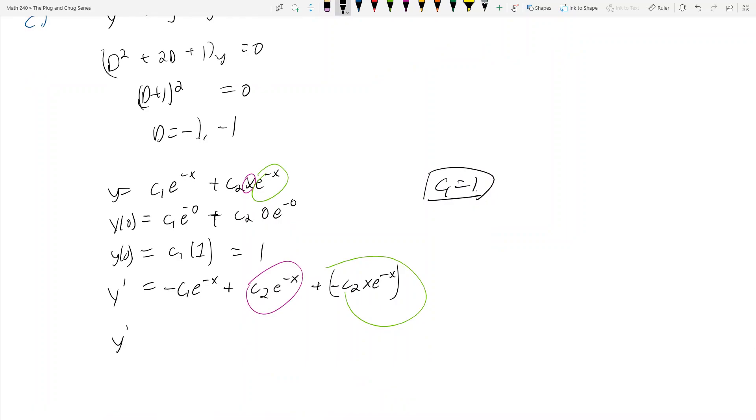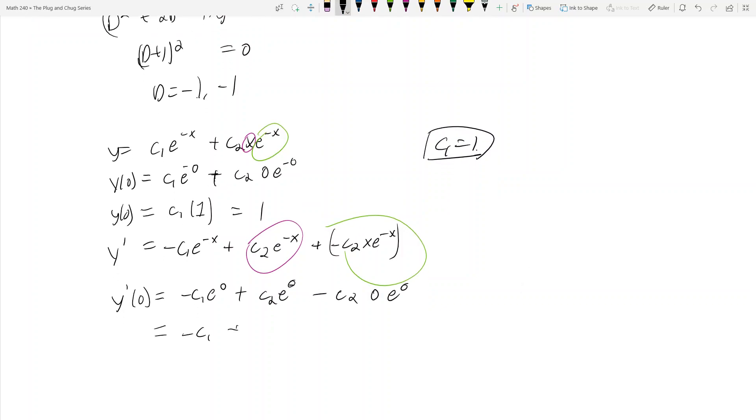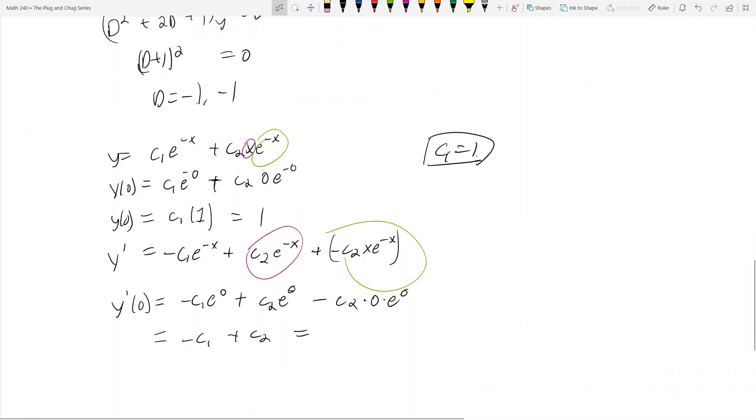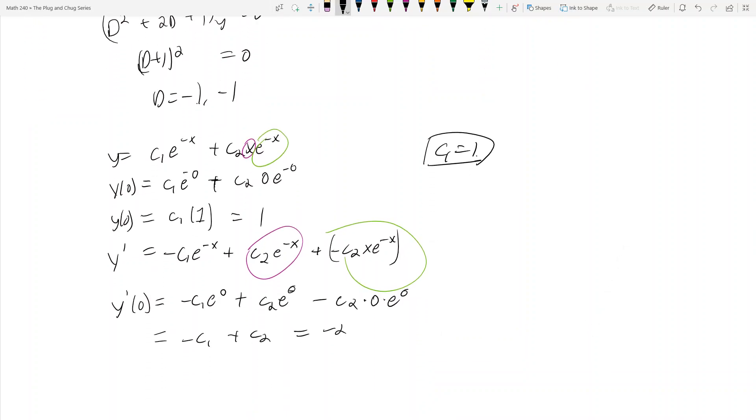Now you say, y prime at 0, well what is that? That's negative C1 e to the 0 plus C2 e to the 0 plus or minus then C2 0 e to the 0. This is negative C1 plus C2, and this guy is 0 so it doesn't matter. What is this equal to? This is equal to negative 2, y prime of 0 equals negative 2, but we know what C1 is. C1 is 1, so this is equal to negative 1 plus C2, which equals negative 2, and so C2 equals negative 1.